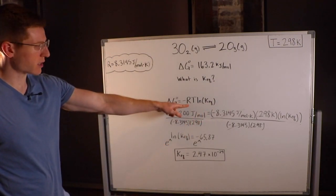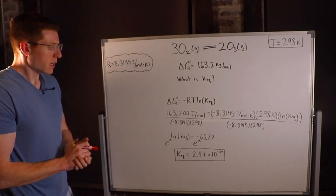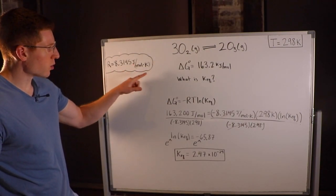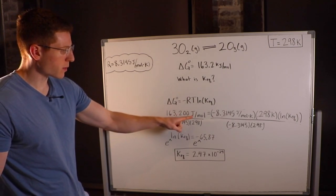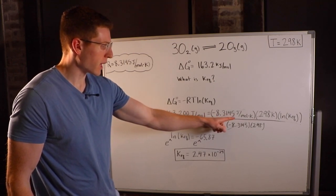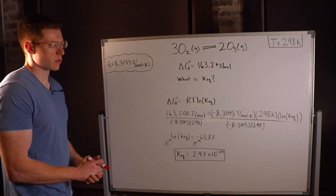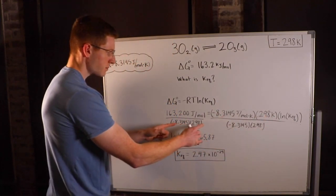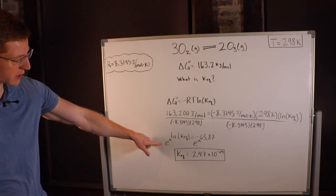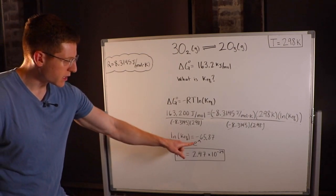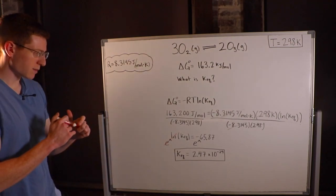R is the gas constant at 8.3145 J/(mol·K). Since R is in joules, delta G must also be in joules: 163,200 J/mol. So 163,200 = -8.3145 × 298 × ln(K_eq). Dividing both sides gives ln(K_eq) = -65.87. Taking e to both sides cancels the natural log, giving K_eq = 2.47 × 10⁻²⁹.